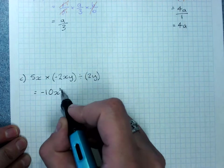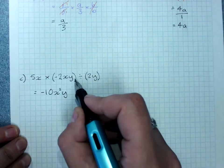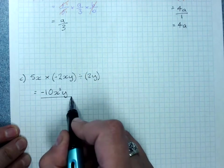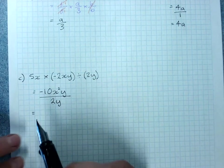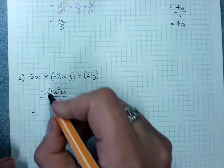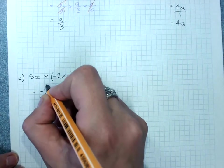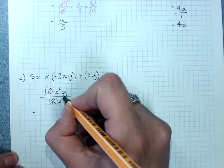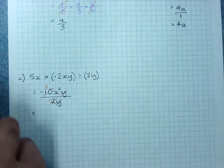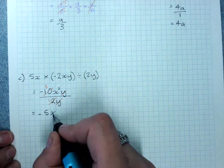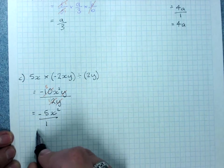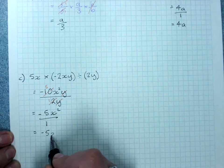x times x, x squared, times y, divided by, write it as a fraction, 2y. Now, cancel common factors. 2 goes into both of these, leaving me with 5 and 1. The y's cancel out and I have negative 5x squared over 1, negative 5x squared.